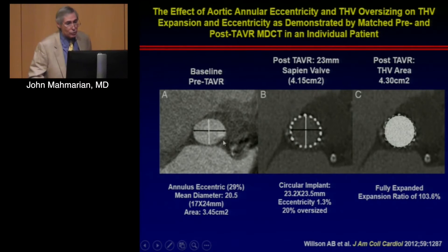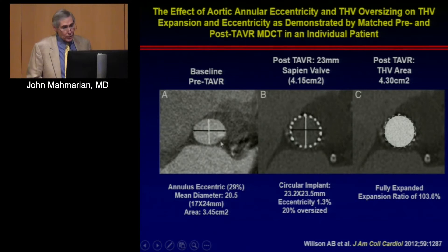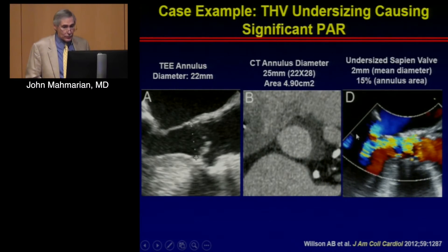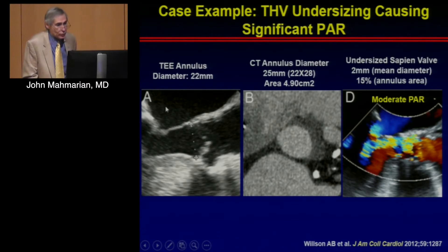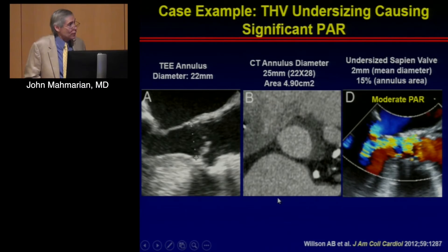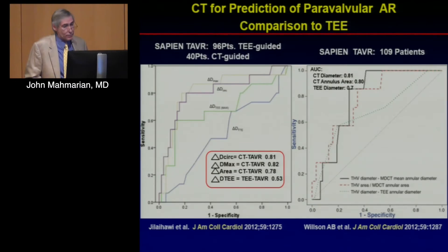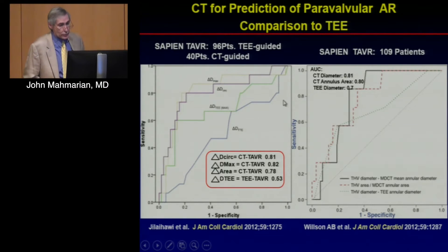With CT we recognize that the annulus is eccentric — more oval than circular — so we can provide both perimeter and area measurements to size the valve precisely. Post-TAVR imaging shows a nicely fully expanded valve when sized correctly. In two trials comparing CT data to echo data, CT performed quite well in predicting absence of paravalvular regurgitation, as shown by the area under the curve analysis.